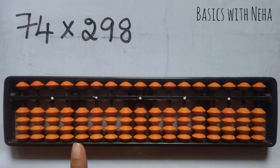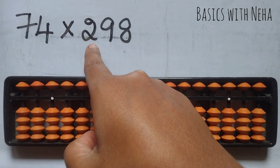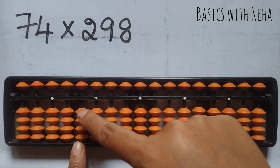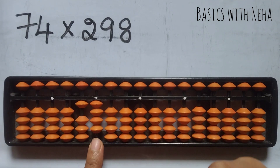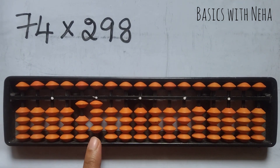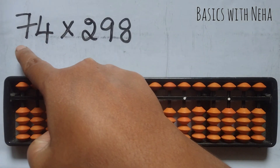So your first number should be placed here. Now 7 twos are 14. This is the last rod you used, so this will be the first rod when you put the next number.